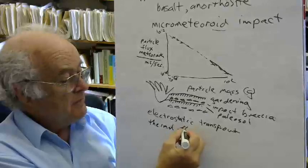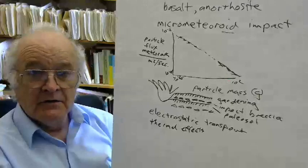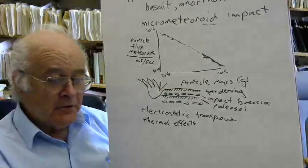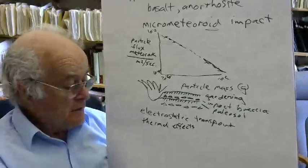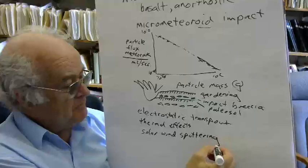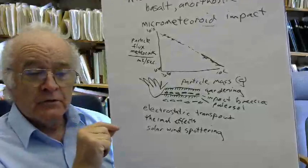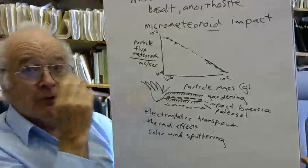There are also thermal effects. The moon on the sunny side is, of course, quite warm. On the other side, it's quite cold. These thermal effects create a certain amount of mixing. There is solar wind sputtering. The solar wind has ionized particles within it, and those ionized particles can impinge upon the surface of mineral grains on the surface of the soil and create tiny pits. This is a very minor effect.